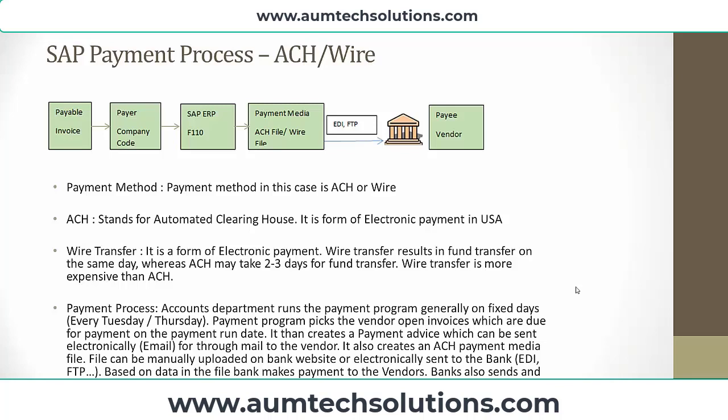The payment process in case of ACH or wire transfer starts with receiving the vendor invoice. The same invoice is entered in the SAP system. We run the F110 payment program, which produces a list of vendor invoices that are due for payment along with the amount. Once the invoice amount is approved, the payment program produces an electronic fund transfer file.